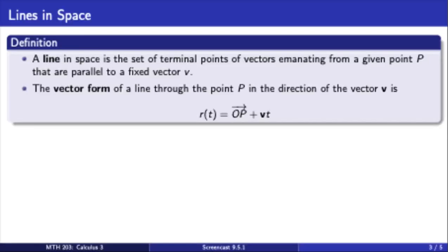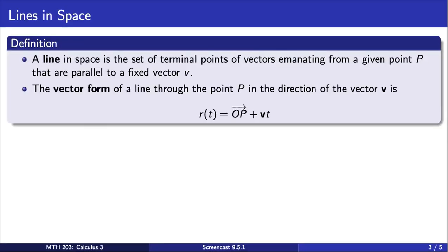The vector form of a line through a point P in the direction of the vector V is given by the following expression, which is a sum of two vectors, as we saw in the last slide. The first vector is a vector from the origin to some point P on the line. The second is a scalar multiple of the vector V. The vector V is often referred to as the direction vector of a line.